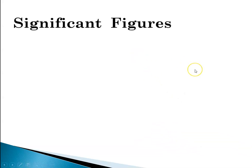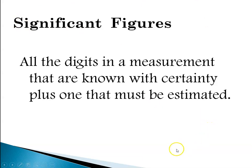That leads us to how we communicate this. When I report a number, in order for you to know whether I used the fancy scale that goes to the thousandths place or the grocery store scale, I'm going to communicate that using something called significant figures. Significant figures are all the digits in a measurement that are known with certainty, plus one digit that must be estimated — the last digit always has to be estimated.